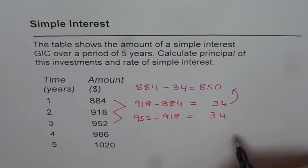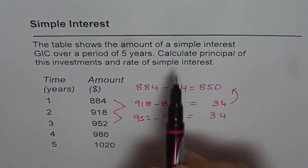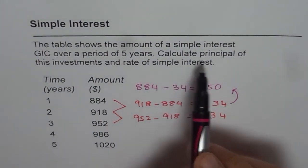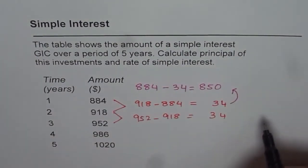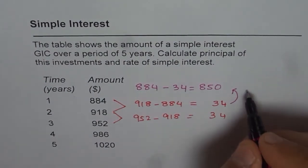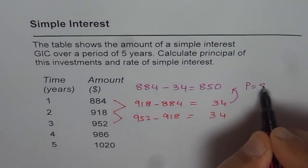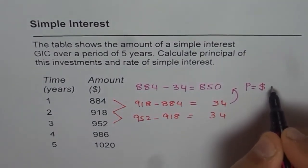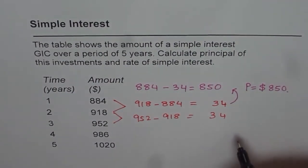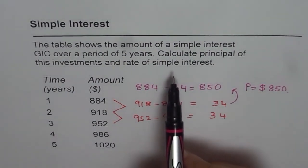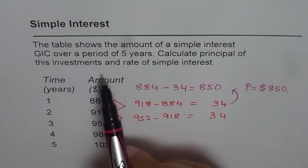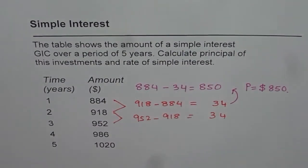So the answer for the first part — calculate the principal of this investment — is: principal equals $850. Now for the second part, we need to calculate the rate of simple interest.